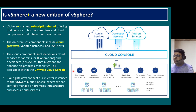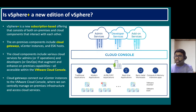Within vSphere, you can run traditional applications, modern Kubernetes and container-based applications, AI, machine learning, high-performance computing, real-time applications, and bare-metal workloads. If you want to connect to public cloud, you configure the cloud gateway. Once installed, the cloud gateway connects to the cloud console, from which you can access on-premises infrastructure and all external cloud services.